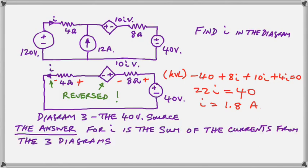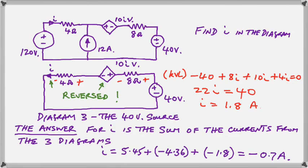Now, putting it all together to find the total current, the answer for I, which is the original I in the overall diagram, will be the algebraic sum of the currents from the three diagrams. And when we put them together, we have to put the two that are flowing in the opposite direction as negative. Remember, always remember that the sign of the current indicates its direction in the circuit.